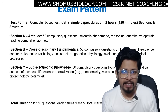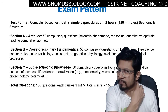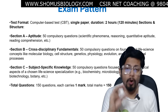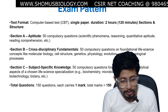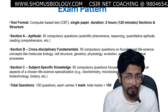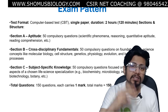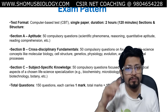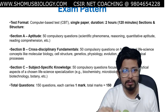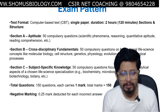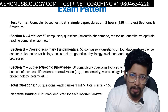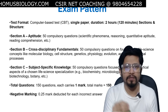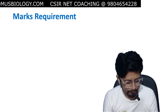The total number of questions is 50 plus 50 plus 50, giving 150 questions. All questions are single, one-mark questions, so total marks is 150. All three sections are compulsory — you have to attend all of them. Negative marking is 0.25 marks, meaning a 25% penalty for each incorrect answer.